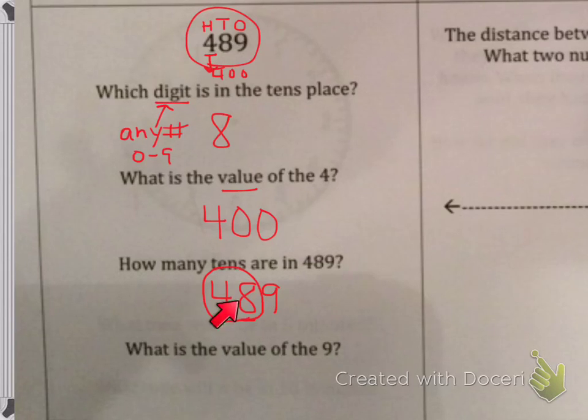So there are forty-eight tens in four hundred and eighty-nine. What is the value of the nine? The value of the nine is nine, because it is nine ones.